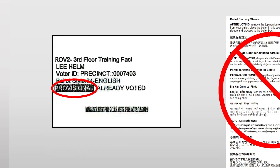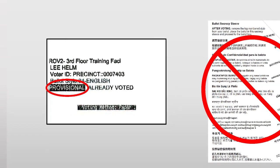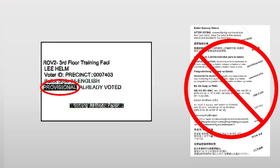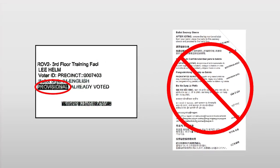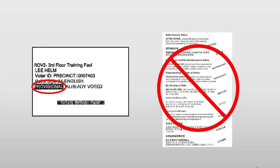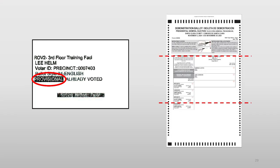Now that the voter's ballot is ready, check the print label. If you see a provisional banner, do not give the voter a secrecy sleeve. If the voter is provisional, trifold their ballot and hand it to the voter with their appropriate envelope.